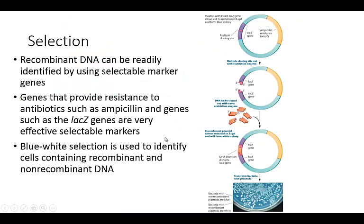Here is some additional information about LacZ. When you cut and clone something in, this disrupts the LacZ gene function. Now the recombinant plasmid cannot metabolize X-gal, and it's going to form a white colony. When looking at plates, some of these little colonies are blue and some are white. When selecting a clone to test, you would want to select one that is white, not blue.